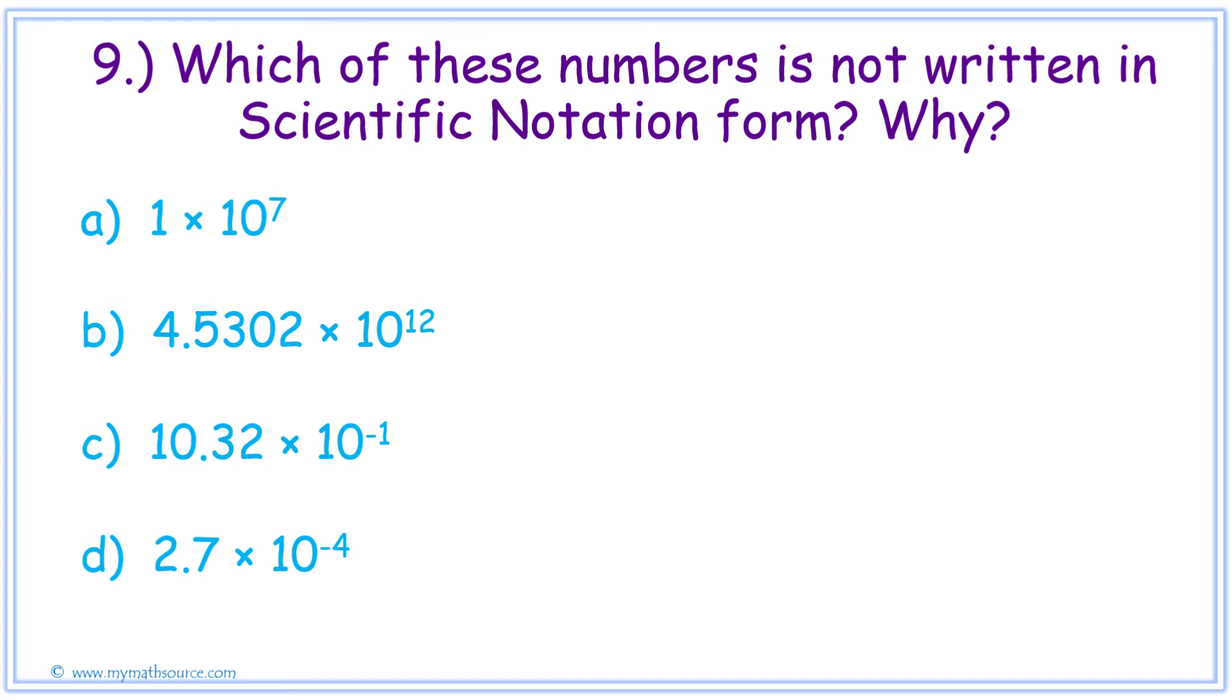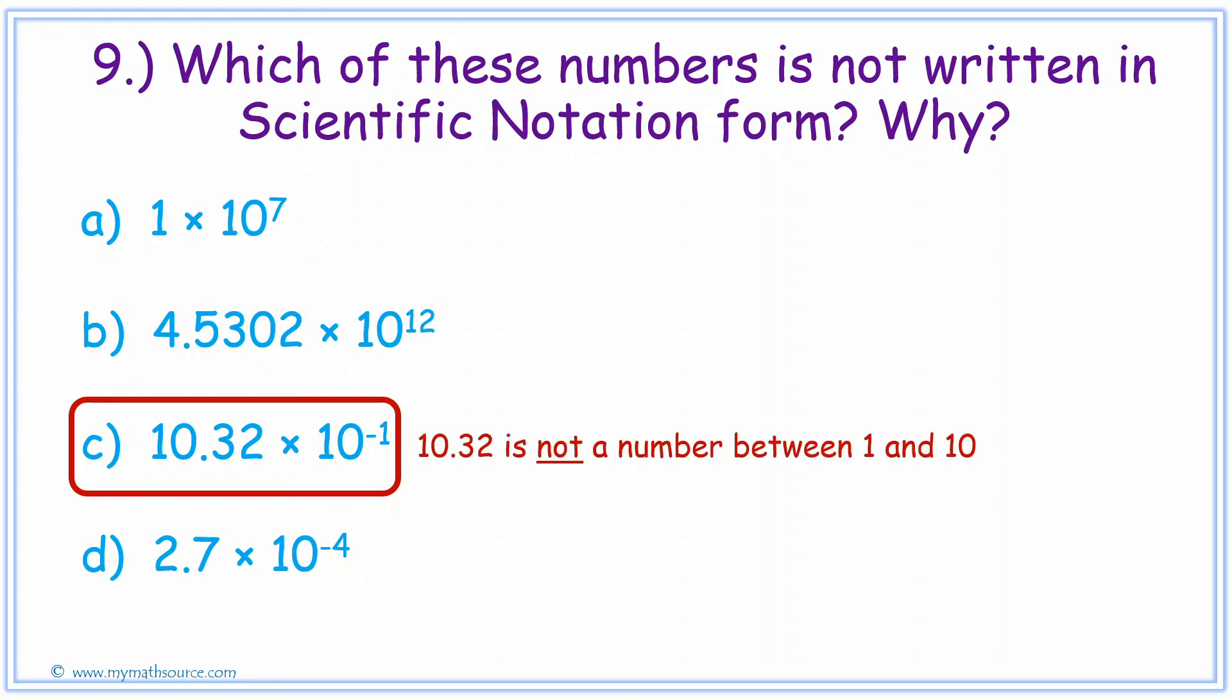Okay, let's do number 9. Which one of these numbers is NOT written in scientific notation form, and why? If you answered C, you were correct. And the reason why is 10.32 is greater than 10, and therefore it is NOT in scientific notation form.